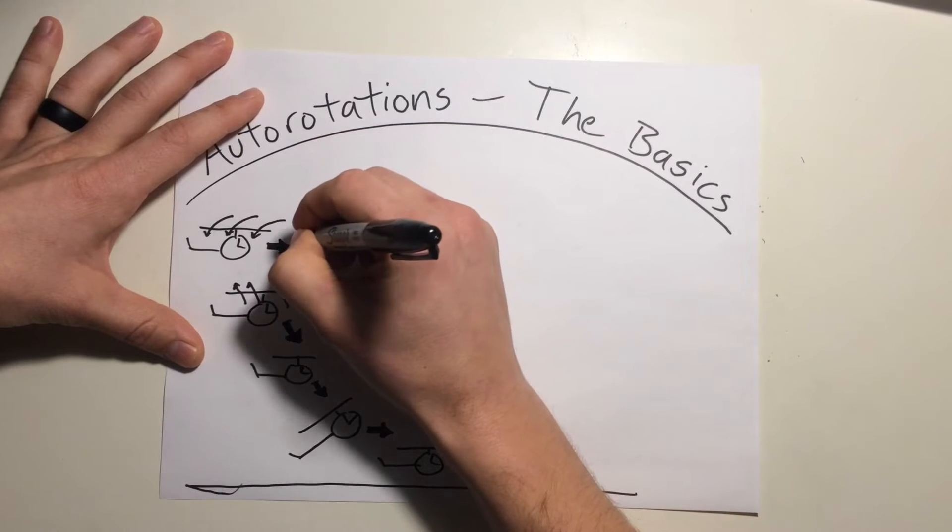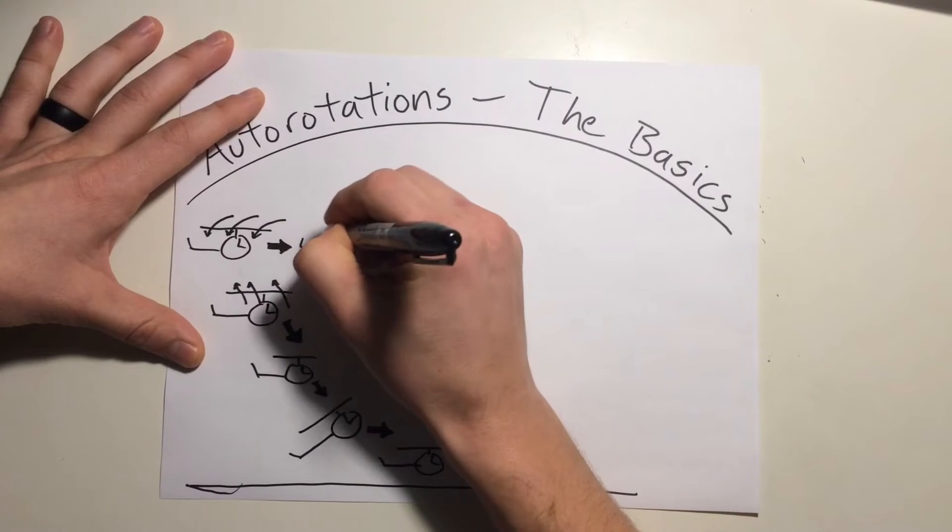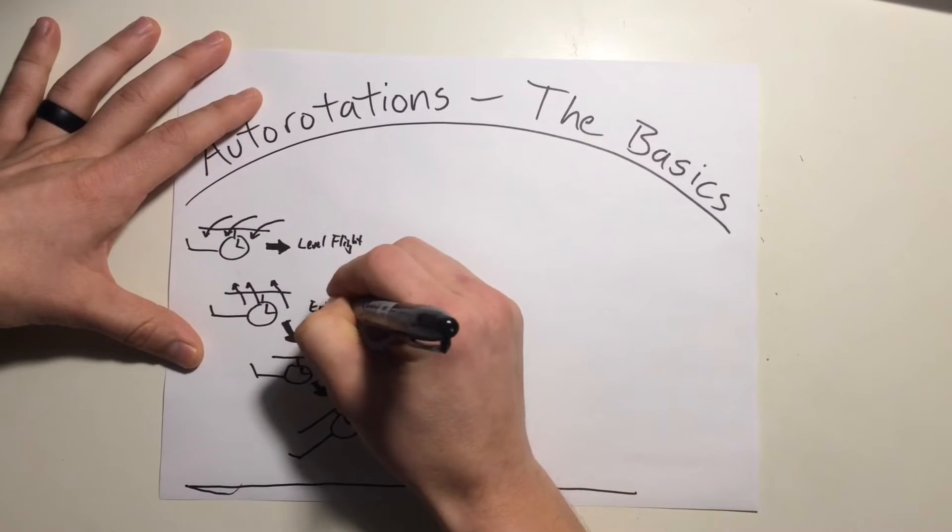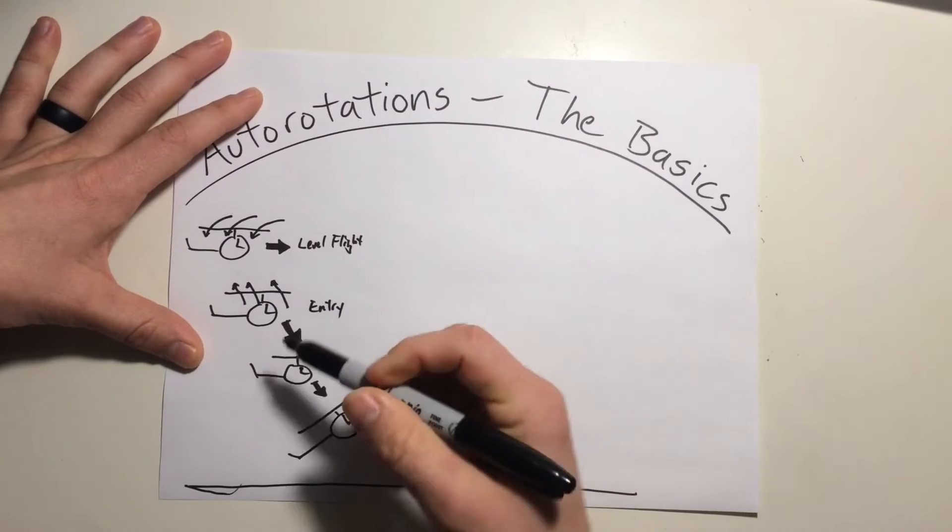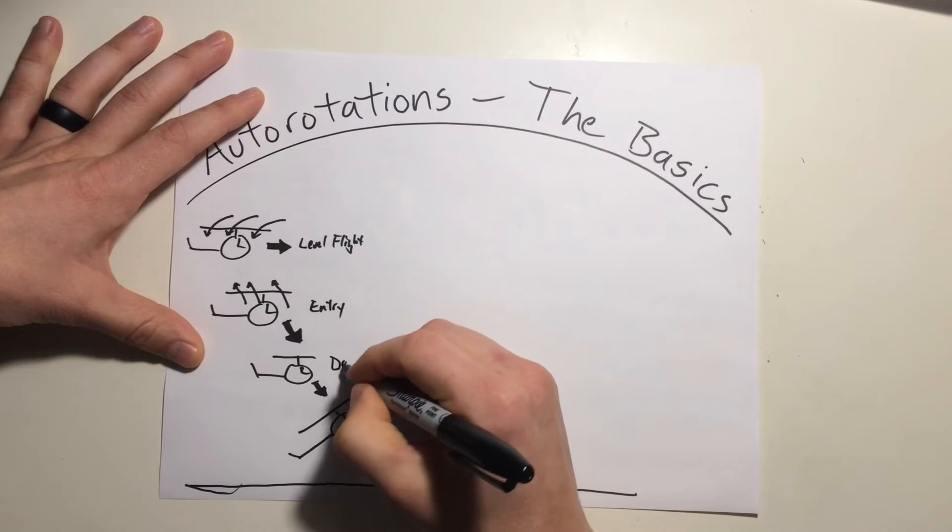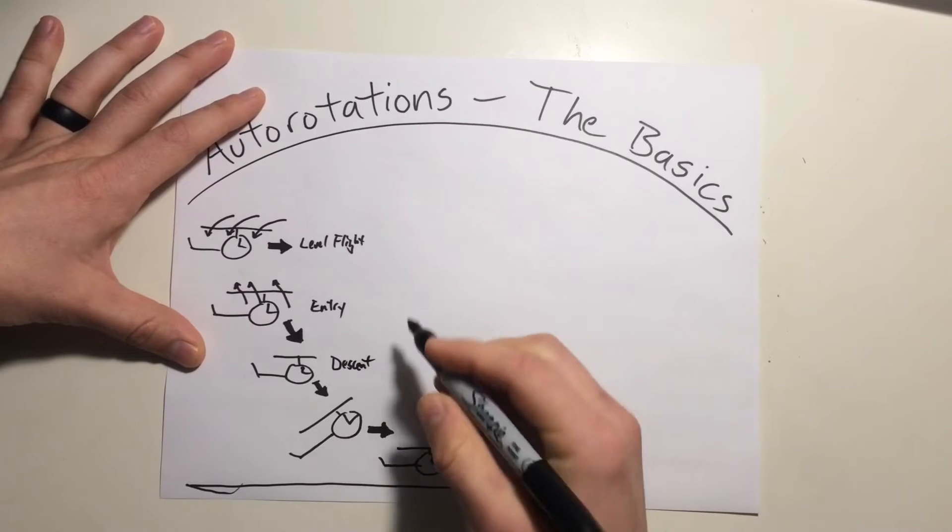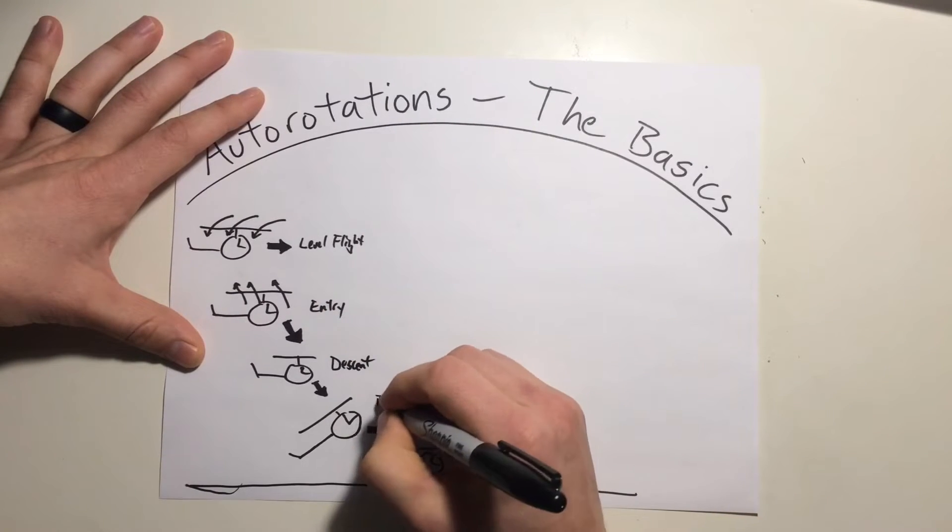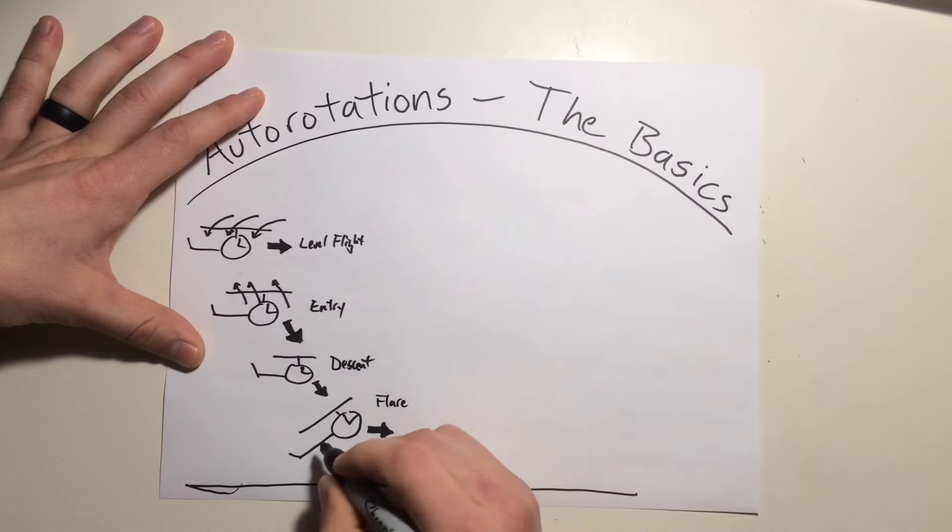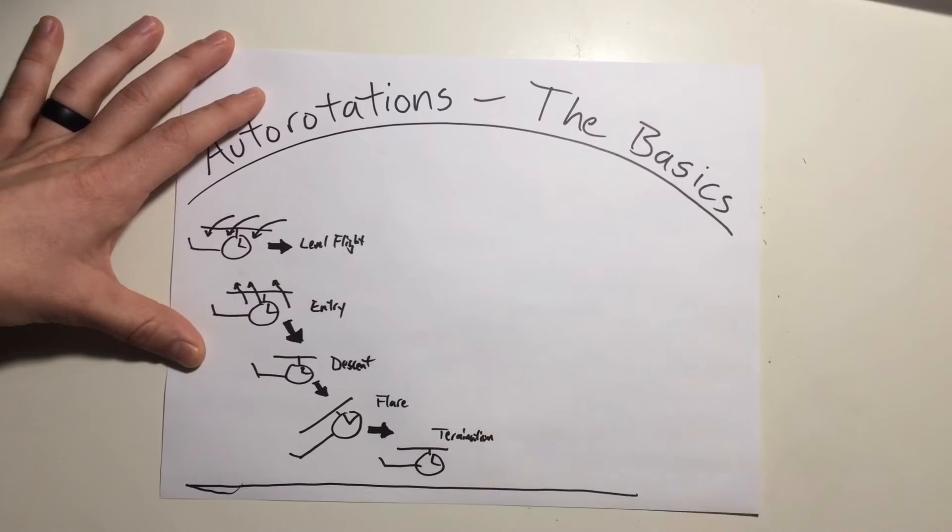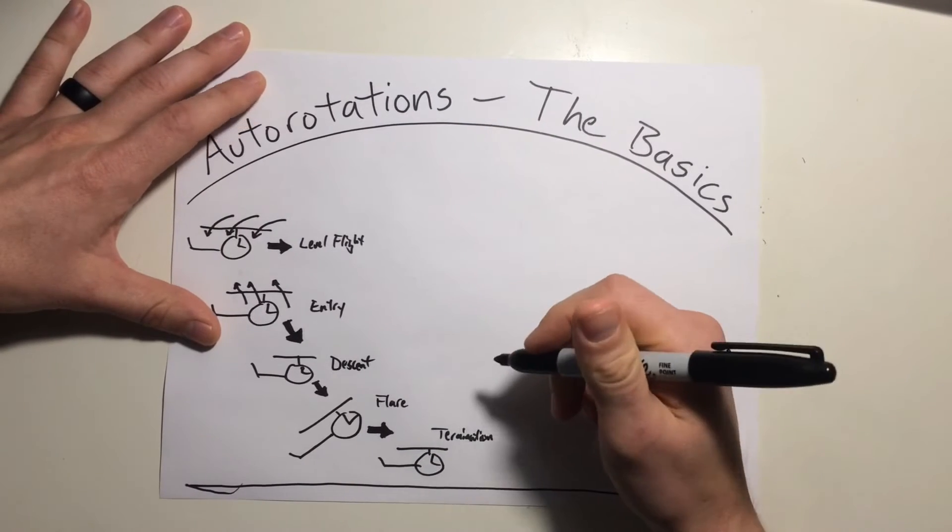So once again, these phases: we had level flight, the entry into the autorotation, immediately dropping that collective down, changing the airflow from a downwards flow to an upwards flow. We have the descent phase where we're cross-checking all of our instrumentation to make sure we are in a steady state autorotation. Prior to the ground, we're going to initiate a flare to stop that rate of descent, and then termination of the maneuver with a collective application to reduce or cushion there at the bottom.